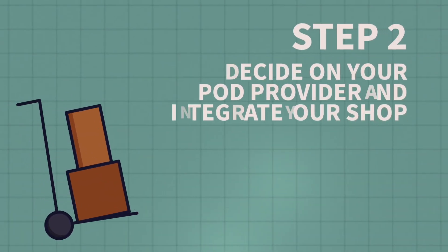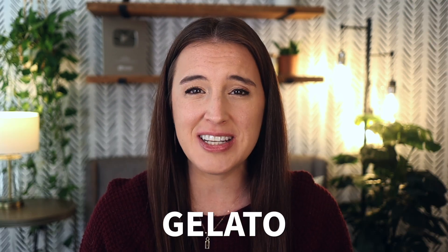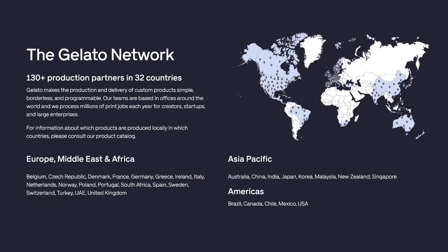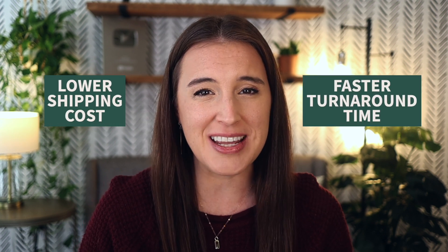Once you've decided on your sales platform and gotten your account set up, move on to step number two: decide on your print-on-demand provider and integrate your shop. Your print-on-demand provider is the one actually creating, filling, and shipping orders on your behalf. There are a lot of great options, but one at the top of my list is Gelato. They have the world's largest network of local print providers — over 130 print facilities in 32 countries. Over 87% of orders are printed in the country they're being shipped to, which means lower shipping costs, faster turnaround time, and happier customers.